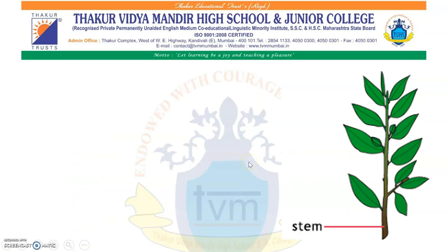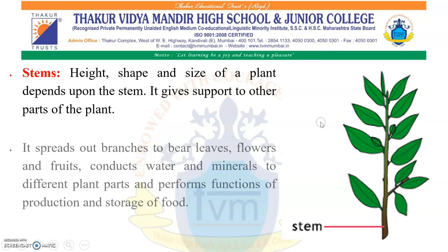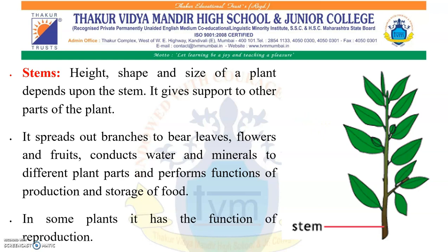Now, stem. Height, shape and size of a plant depends upon the stem. It gives support to other parts of the plant. It spreads out branches to bear leaves, flowers and fruits. It conducts water and minerals to different parts of the plant, and it also performs the function of production and storage of food. In some plants it also has the function of reproduction.